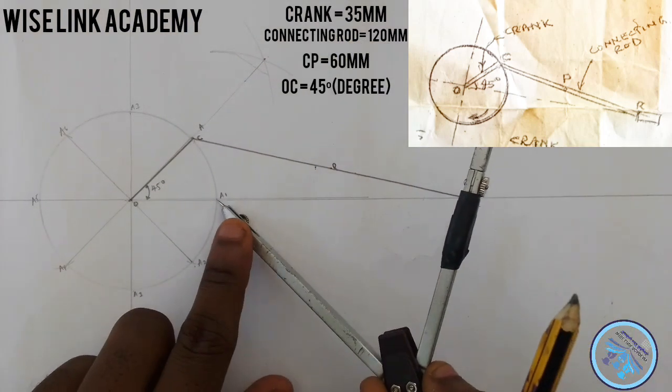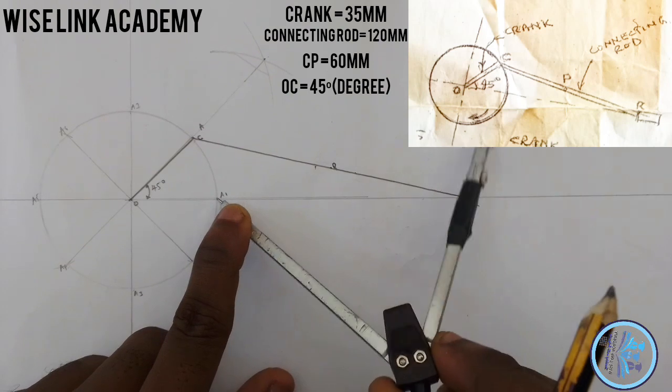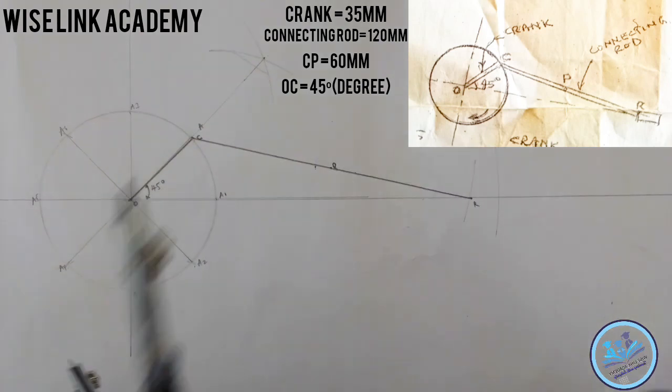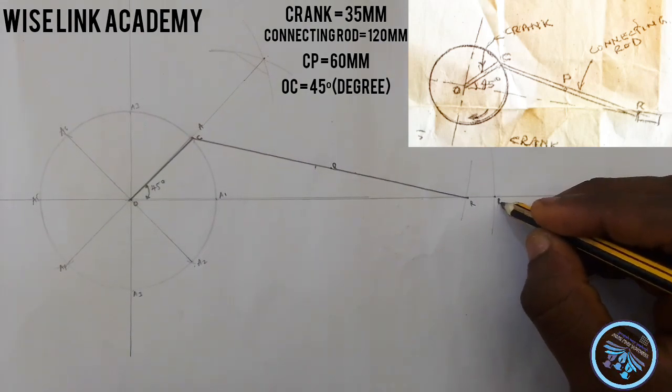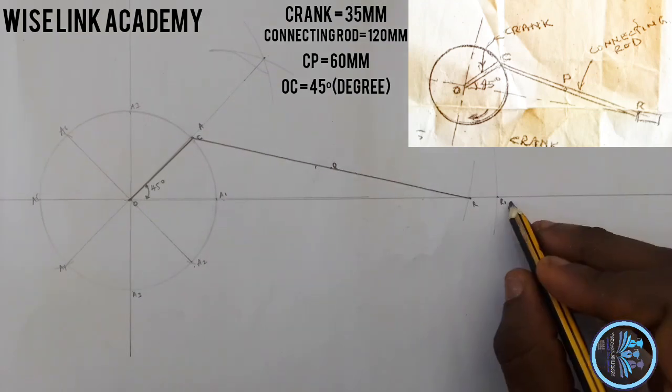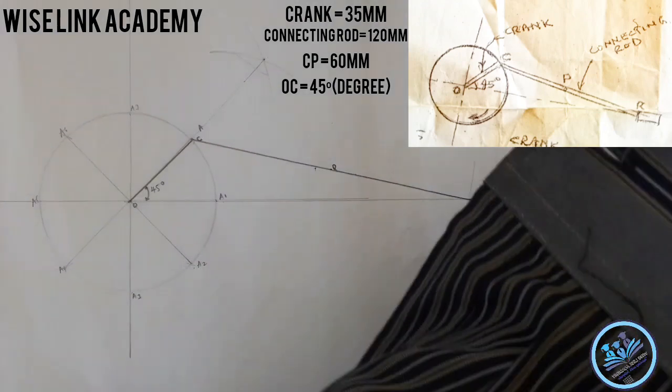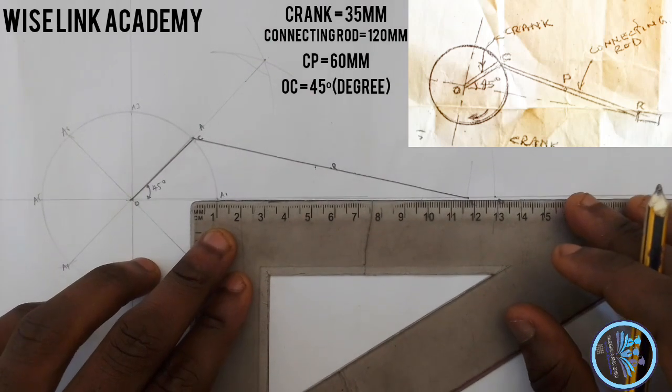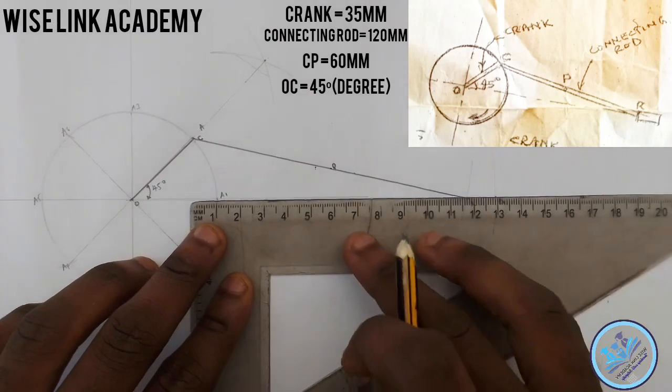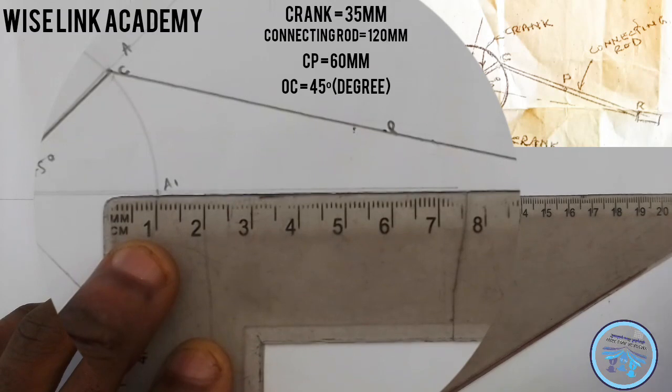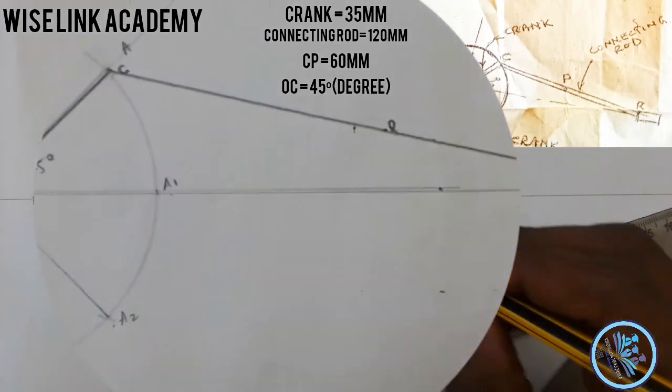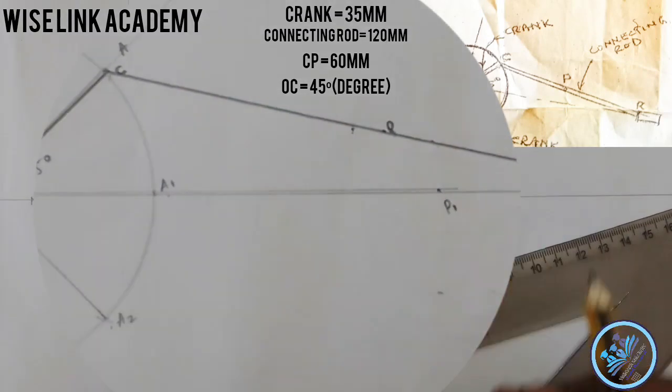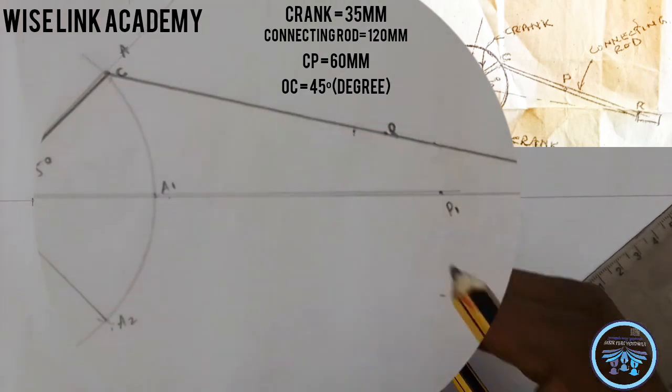Similarly you come to your A1, strike an arc. Where the arc crosses that horizontal line you have drawn, we call it R1 because I named it A1, so R1. Connect R1 and A1 together. You measure the same 60, so this is my point 60, then we got P1.